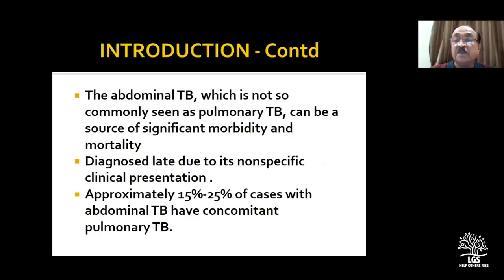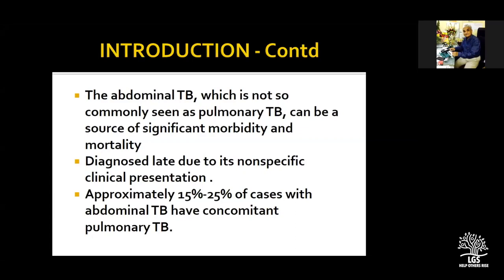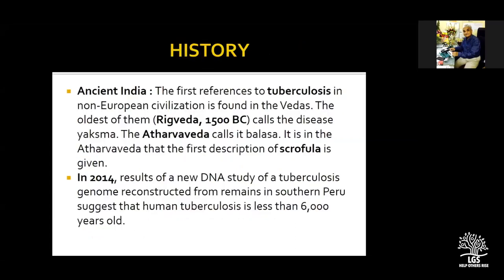Abdominal TB, which I'm going to talk about, is not all that common as pulmonary TB, but it causes significant morbidity and mortality, and it's a surgeon's topic. We should have a clear idea about it. Often the diagnosis is delayed, and roughly about 15 to 25 percent of abdominal TB patients also have pulmonary tuberculosis.